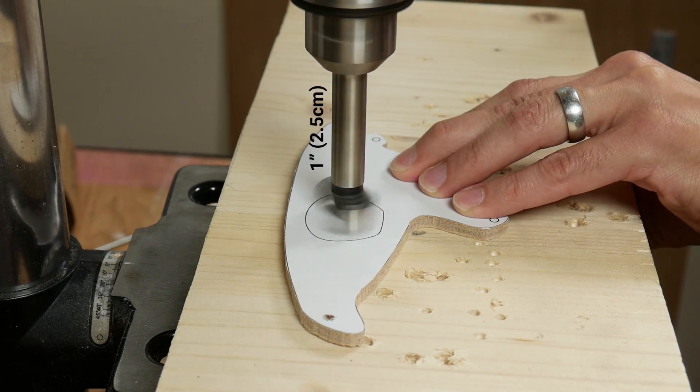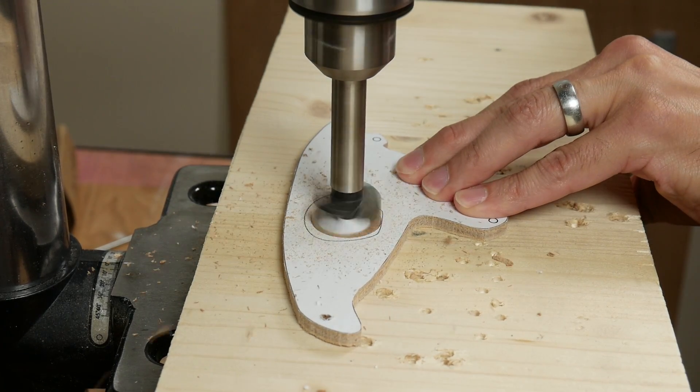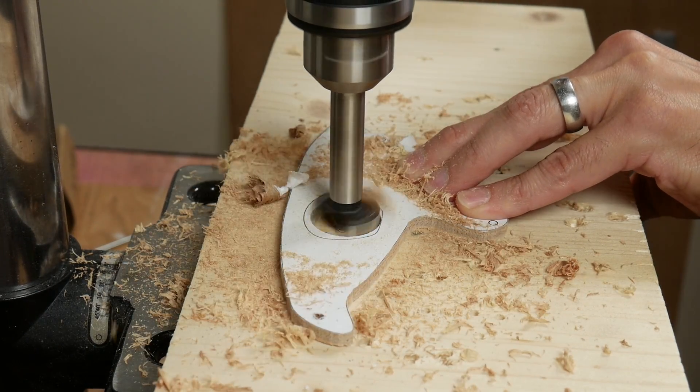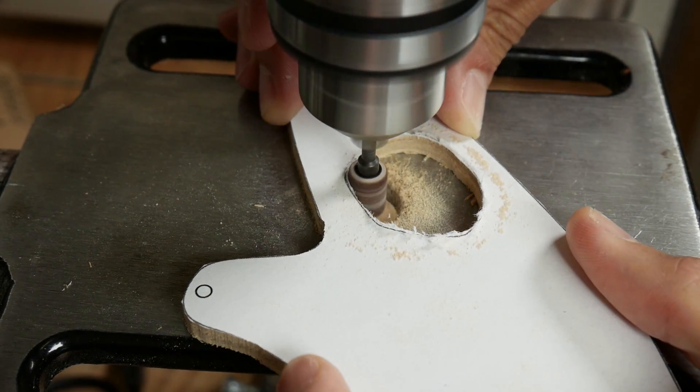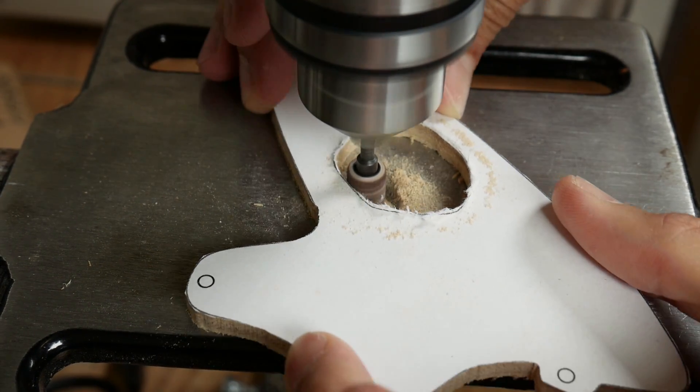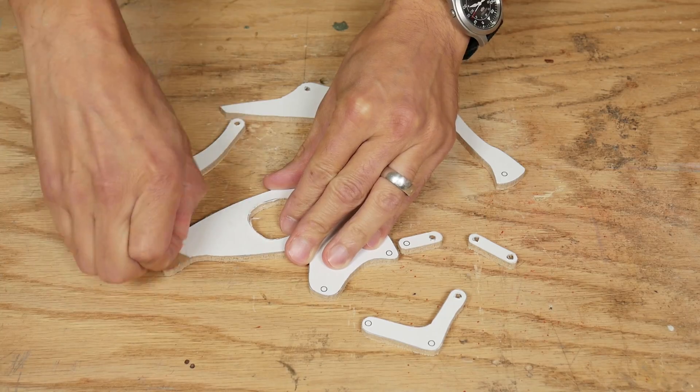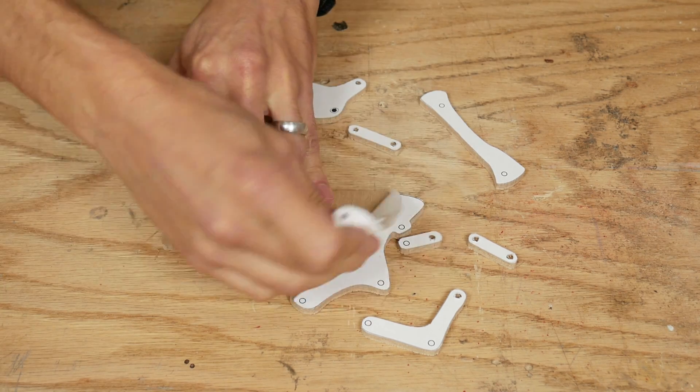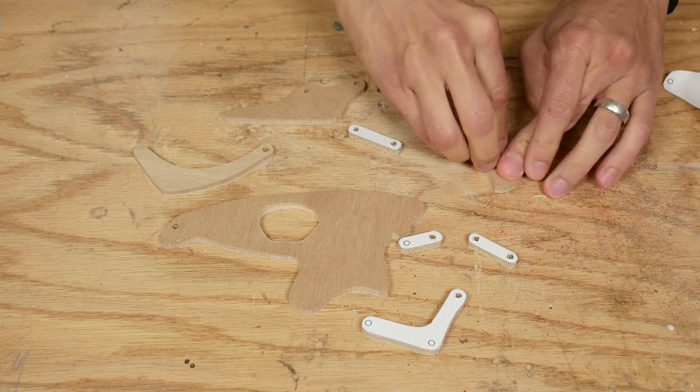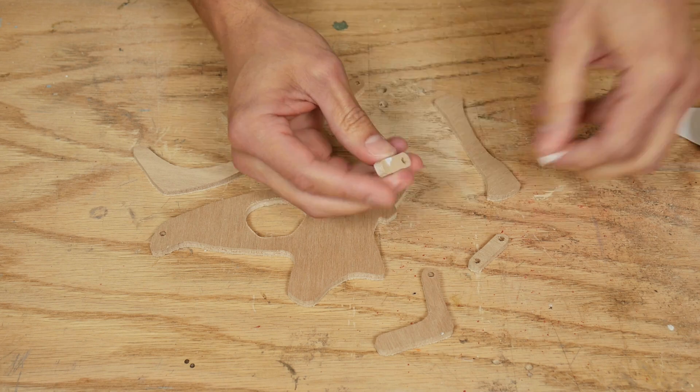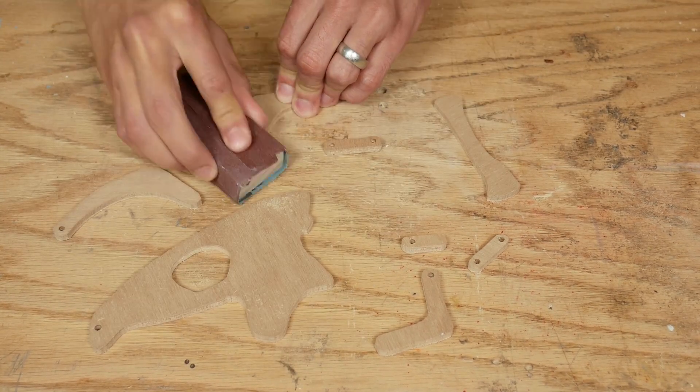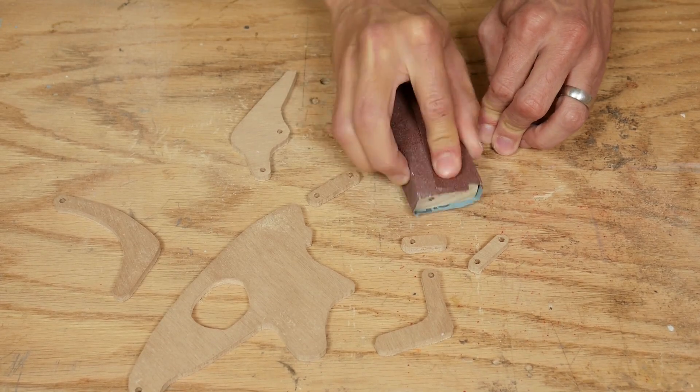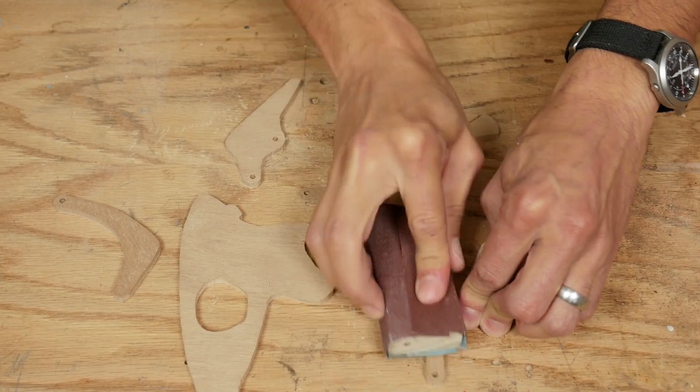I used a 1 inch forstner bit to drill out most of the orbit, then used a small sanding drum to finish the shape. I removed the template from the pieces and sanded all the pieces nice and smooth. Here are the final pieces of the model.